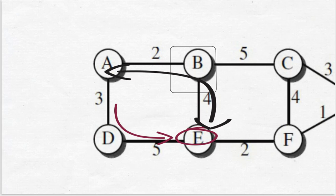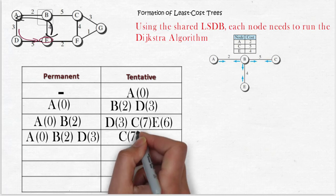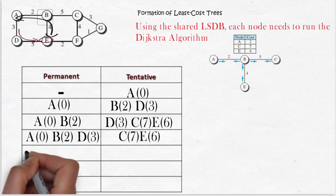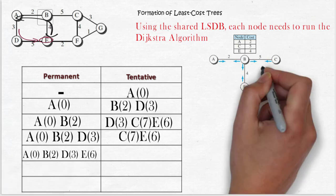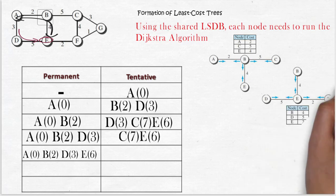Links A, B, and E are considered. Now node E with least cost 6 is moved to permanent, and adjacent nodes to E are B, D, and F.